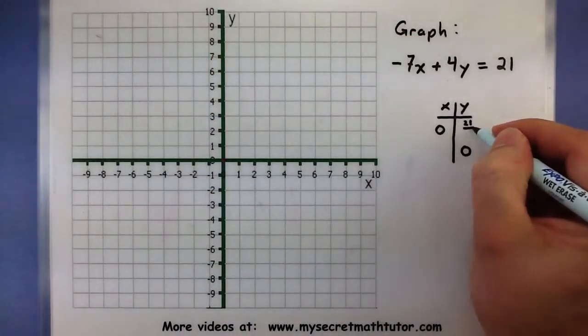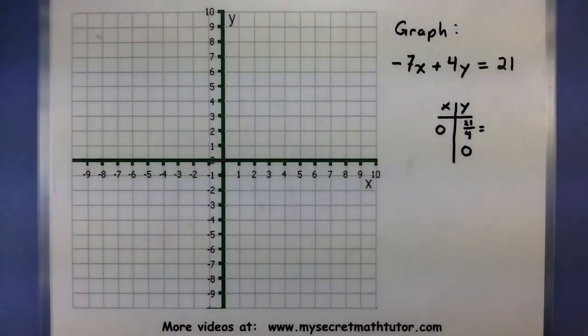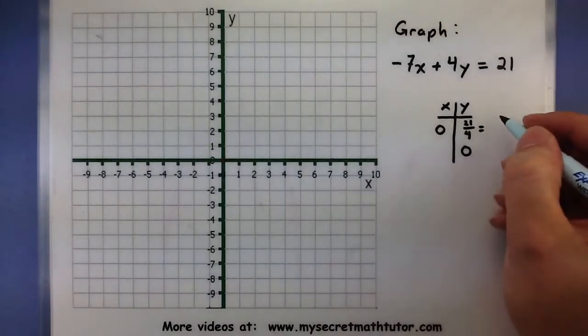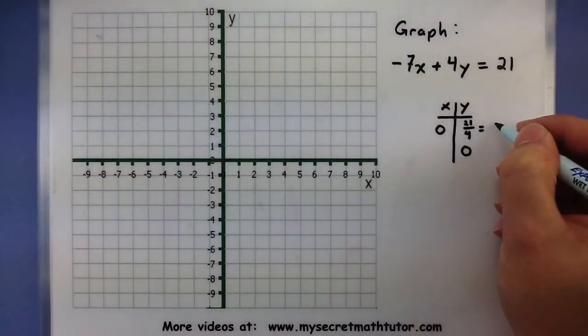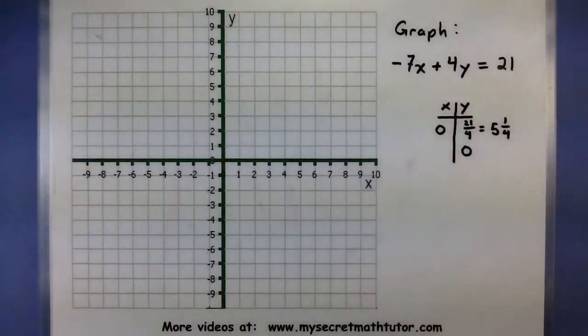Now it's okay to get fractions when using this method. And just to make maybe graphing easier, go ahead and reduce this fraction. So 4 goes into 21 five times. We'll have 1 fourth left over. So 5 and 1 fourth.